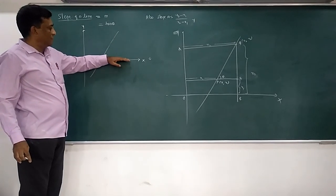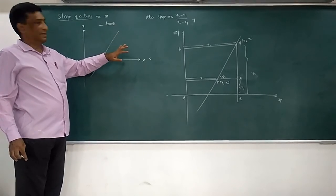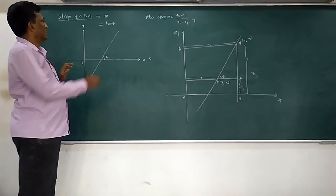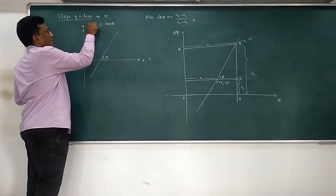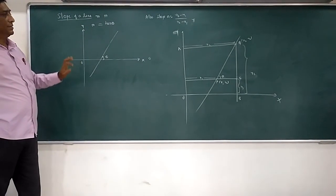So we measure the angle from here - that gives you theta, and inclination in short. Then slope m is given by tan theta. That gives you the slope of a line.